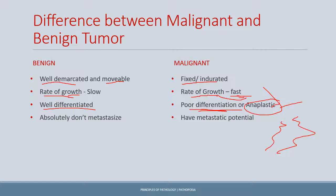By definition, benign tumors absolutely do not metastasize. In contrast, malignant tumors have metastatic potential — meaning the tumor has the ability to spread to a distant site. However, a malignant tumor may not necessarily spread; it has the ability to spread but may remain localized.